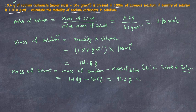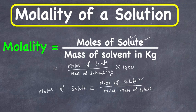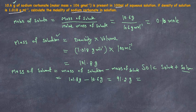We need the mass of the solvent in kilograms, so we convert from grams to kilograms. 91.2 grams equals 91.2 × 10⁻³ kilograms.